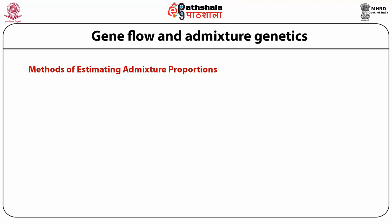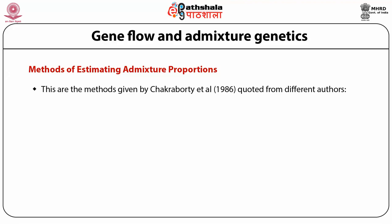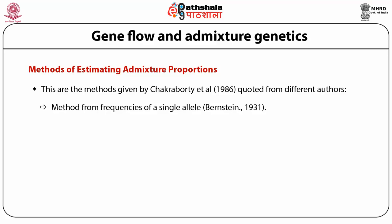Now let's come to the methods of estimating admixture proportions. A wide variety of methods have been proposed utilizing data of various kinds. The first is the method from frequencies of a single allele, given by Bernstein. He was the first to use allele frequency data in hybrid and parental populations to estimate the proportional contribution of the ancestral stock in the hybrid population.